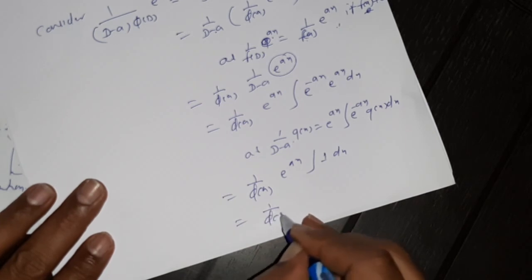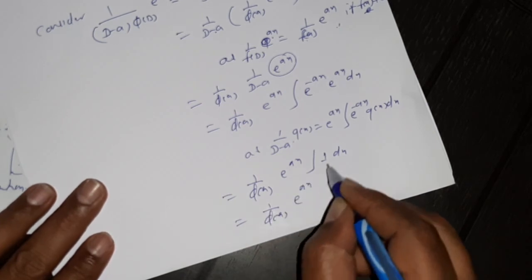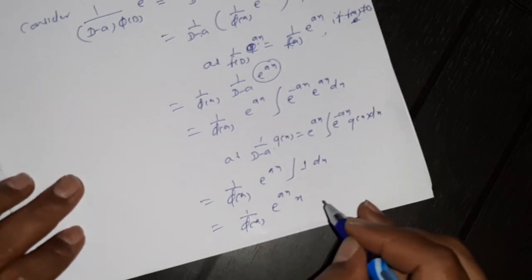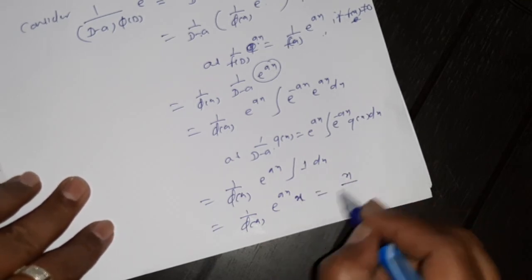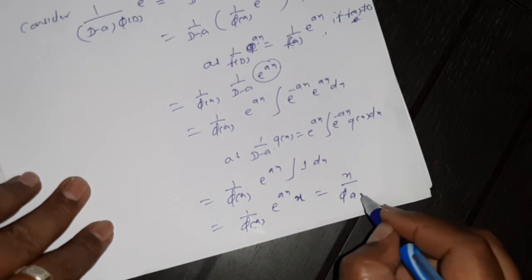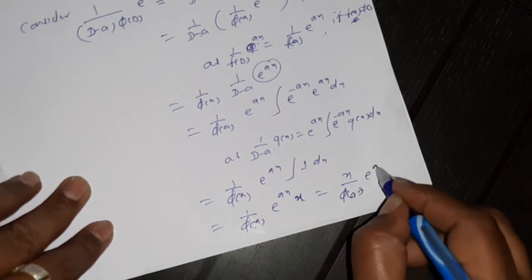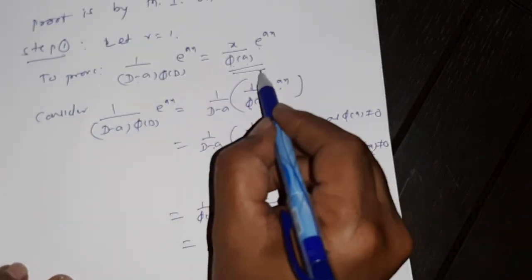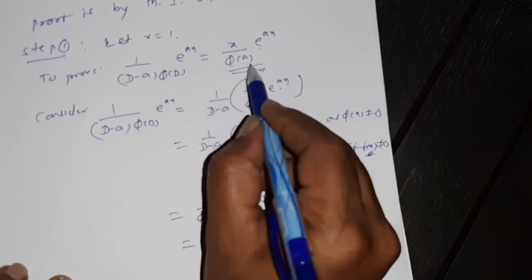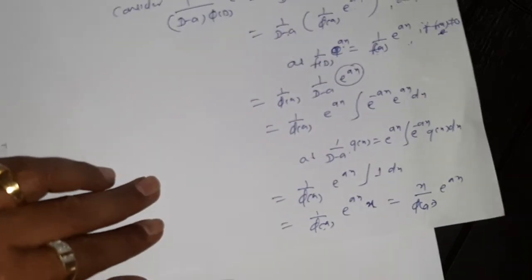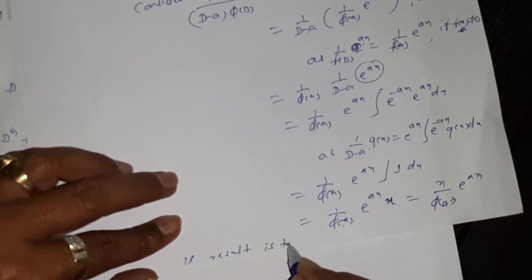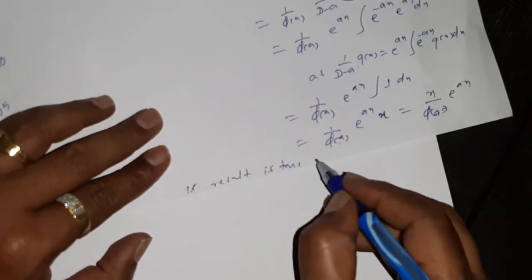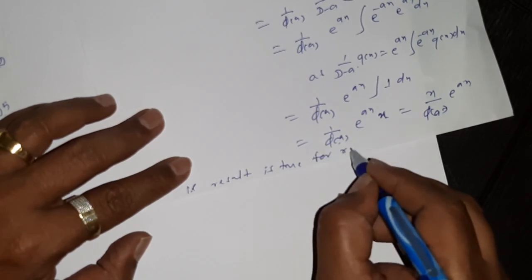Then 1 by φ(a) times e raised to ax — this is e raised to 0, and e raised to 0 is 1. The next step: 1 by φ(a) times e raised to ax times integration of 1 is x. So we have x divided by φ(a) times e raised to ax, that is x by φ(a) times e raised to ax. Therefore the result or theorem is true for r equals 1, and the first step of mathematical induction is completed.